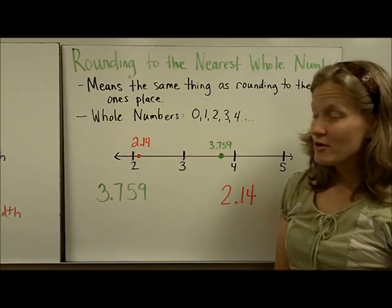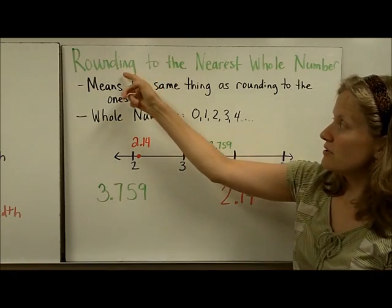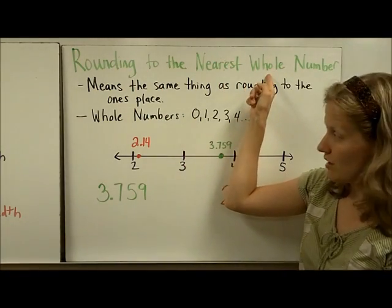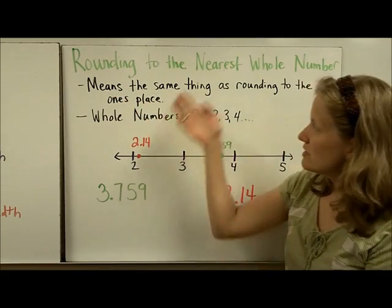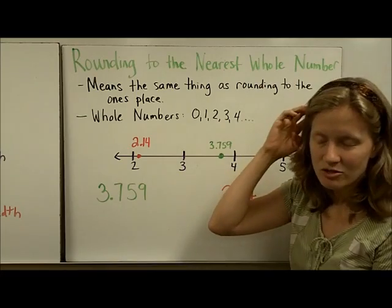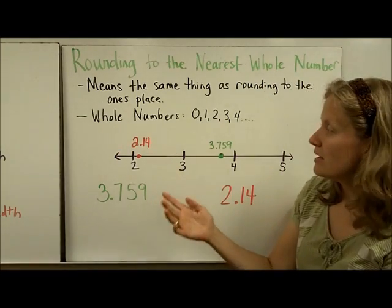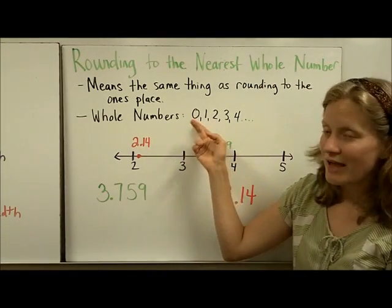One more kind of common problem that you're going to see are problems asking you to round to the nearest whole number. This means the same thing as rounding to the ones place. Whenever you see round to the nearest whole number, your brain should just think ones place immediately.